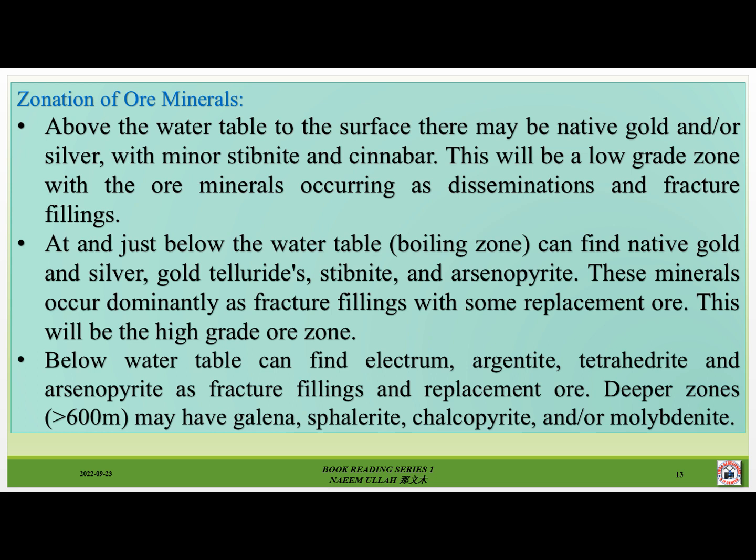Zonation of ore minerals. Above the water table to the surface, there may be native gold and/or silver with minor stibnite and cinnabar. This will be a low-grade zone with ore minerals occurring as disseminations and fracture fillings. At and just below the water table in the boiling zone, one can find native gold and silver, gold tellurides, stibnite and arsenopyrite; these occur dominantly as fracture fillings with some replacement ore — this will be the high-grade ore zone. Below the water table one can find electrum, argentite, tetrahedrite and arsenopyrite as fracture fillings and replacement ore. Deeper zones, greater than 600 m, may have galena, stibnite, chalcopyrite and/or molybdenite.